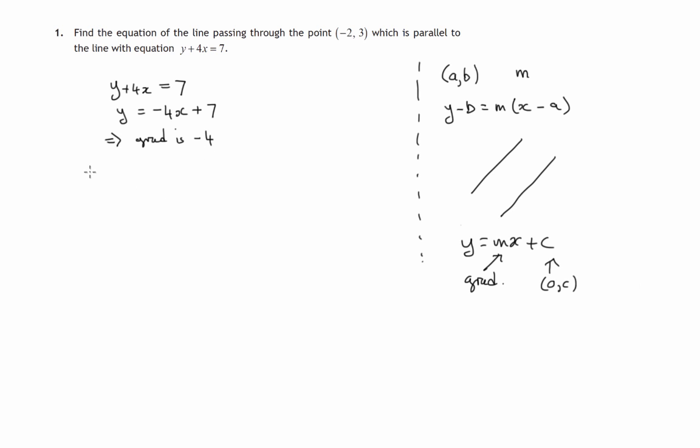So, required line has gradient negative 4 and passes through, as we're told, (-2,3).